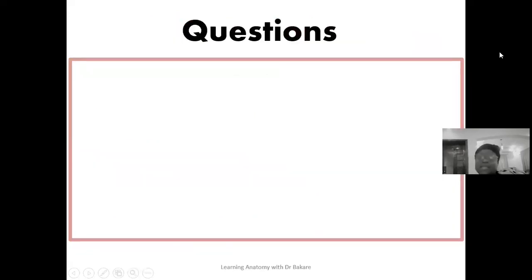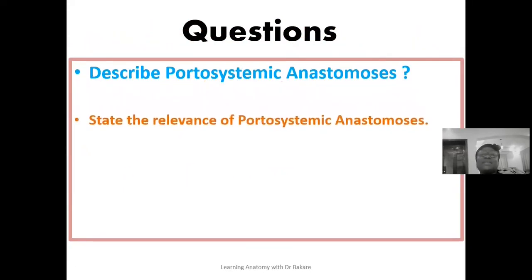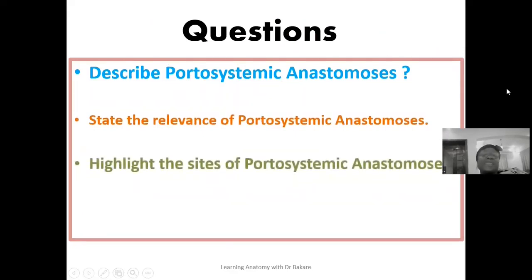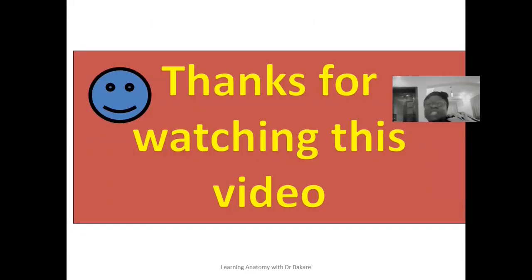Let's look at these review questions. The first is to describe portosystemic anastomosis. The second is to state the relevance of portosystemic anastomosis. The third is to highlight the different sites where portosystemic anastomosis are created. The last question is to describe caput medusae. We've adequately established all these in our lecture. Thanks for watching this video — let's meet again.